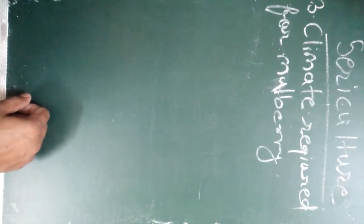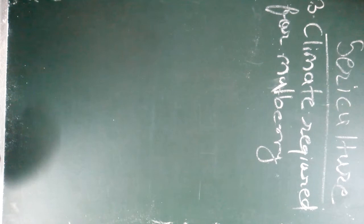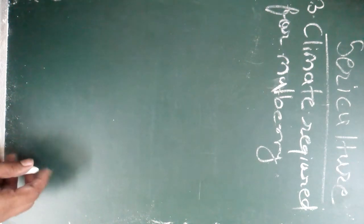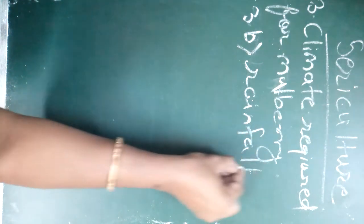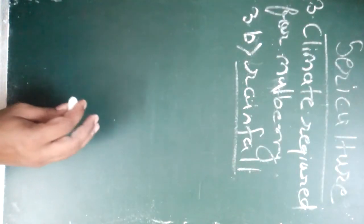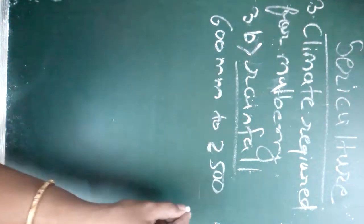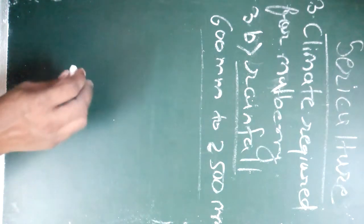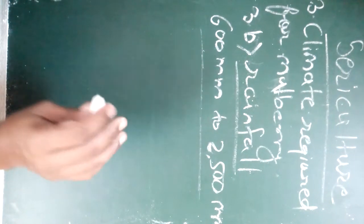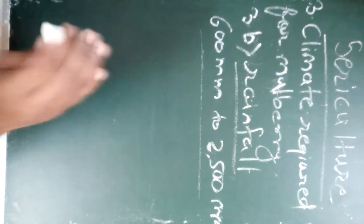Hello students. In the last video we discussed about the climate required for mulberry, where we completed the first type — atmospheric temperature. Now we discuss the next point, that is rainfall. For the proper growth of the mulberry plant it requires 600 millimeter to 2500 millimeter of rainfall. When the rainfall ranges between 600 to 2500 millimeter, the mulberry plant shows proper growth and development. When the rainfall is very low, growth remains stunted.